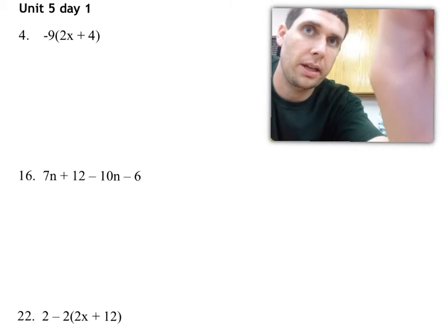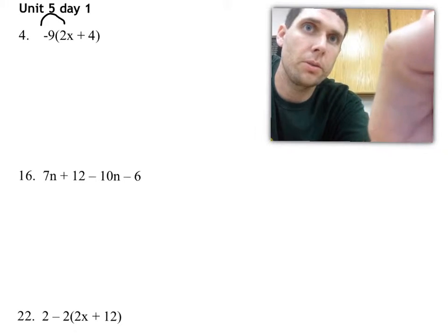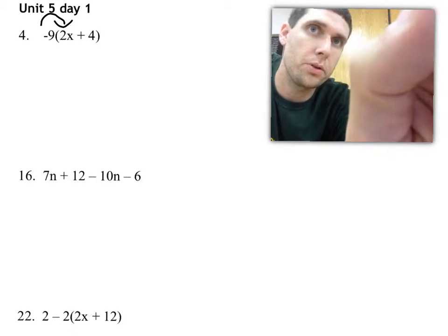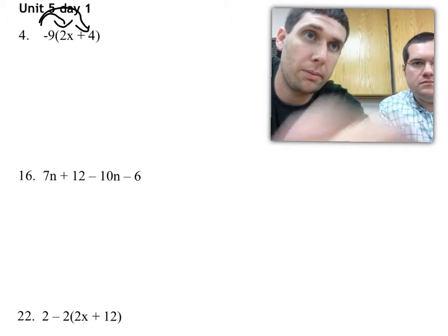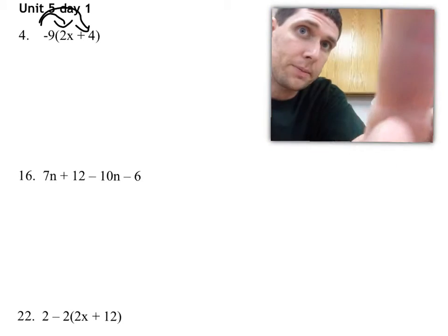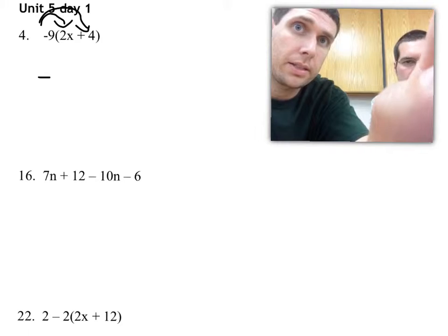So what we're going to do is we're going to take negative 9, and distribute means to multiply through a set of parentheses. So I drew two arrows, just reminding myself that I'm going to take negative 9 and times it by 2x first. That's negative 18x.